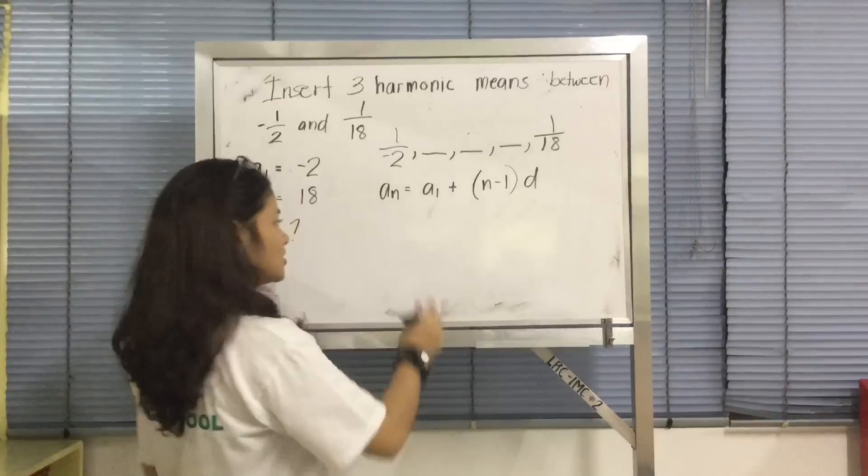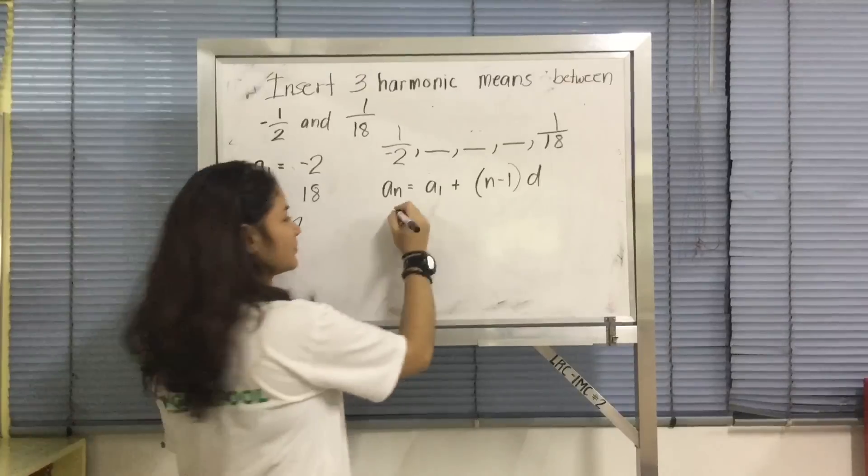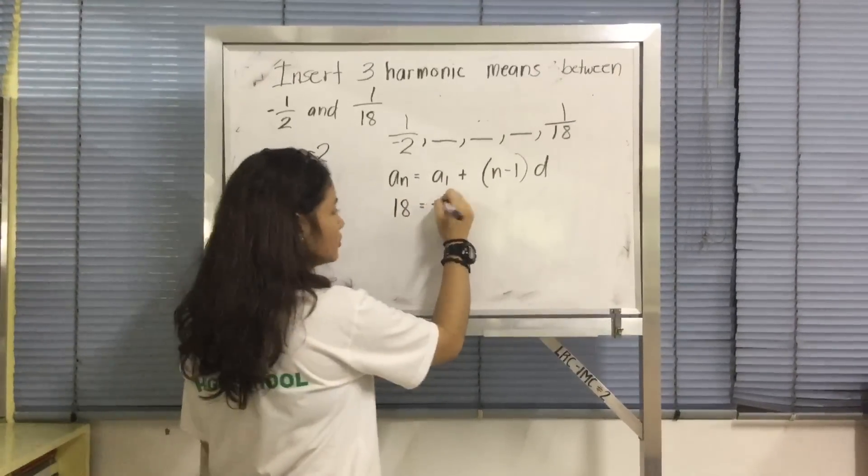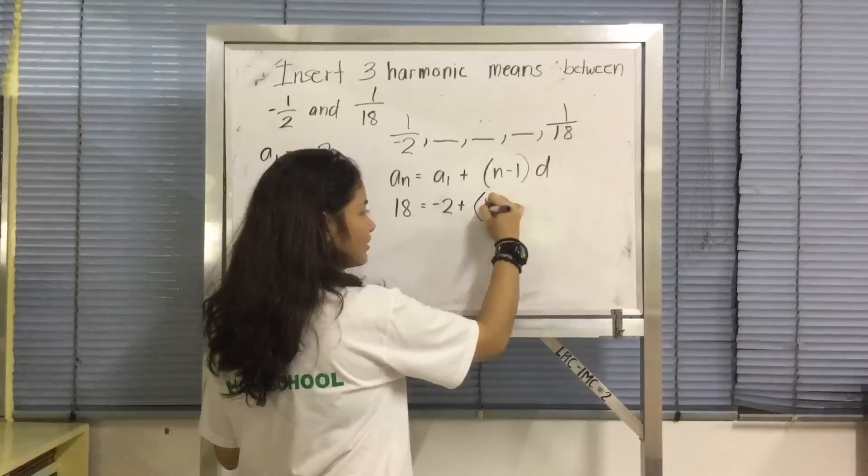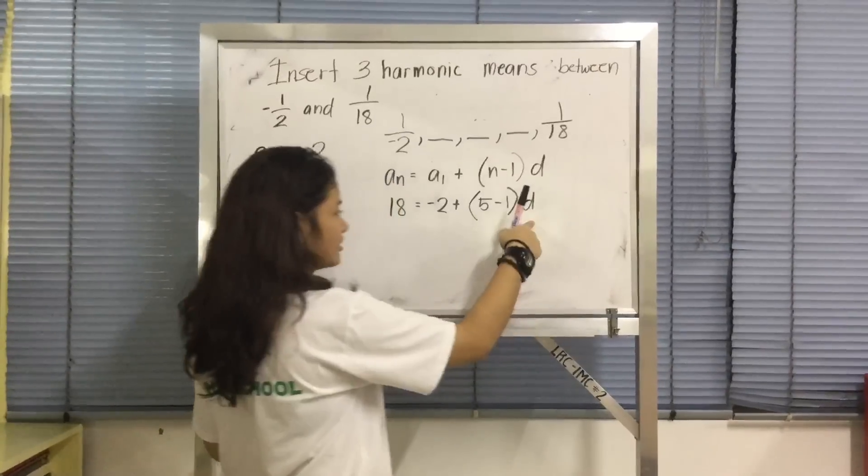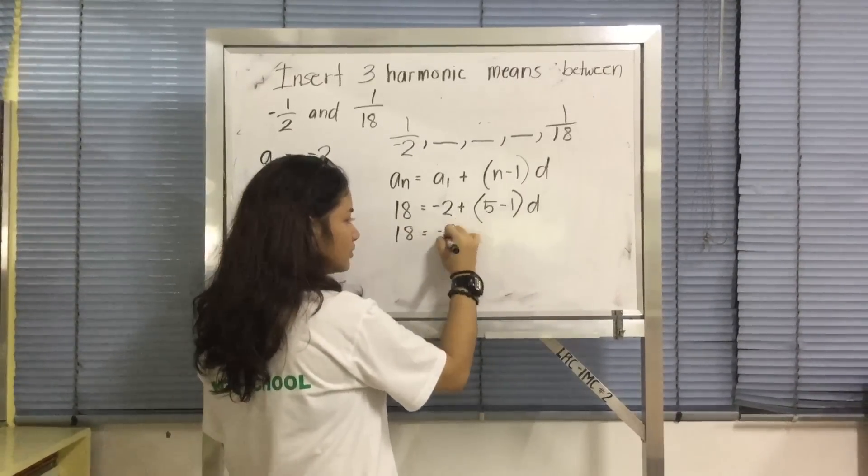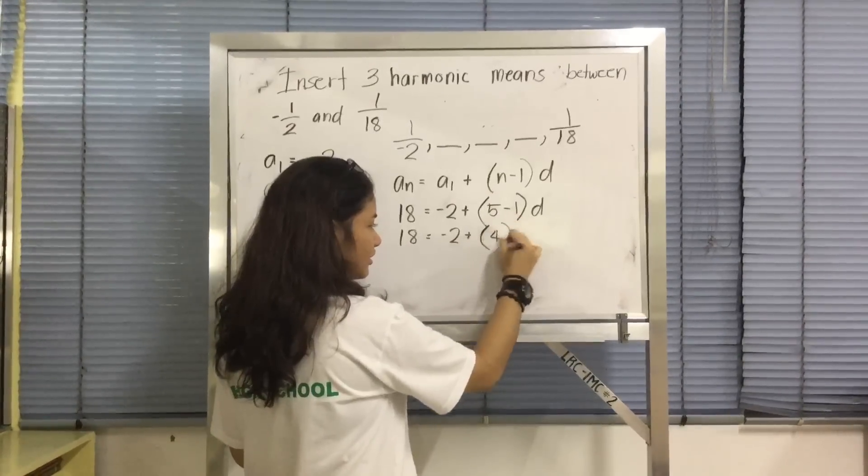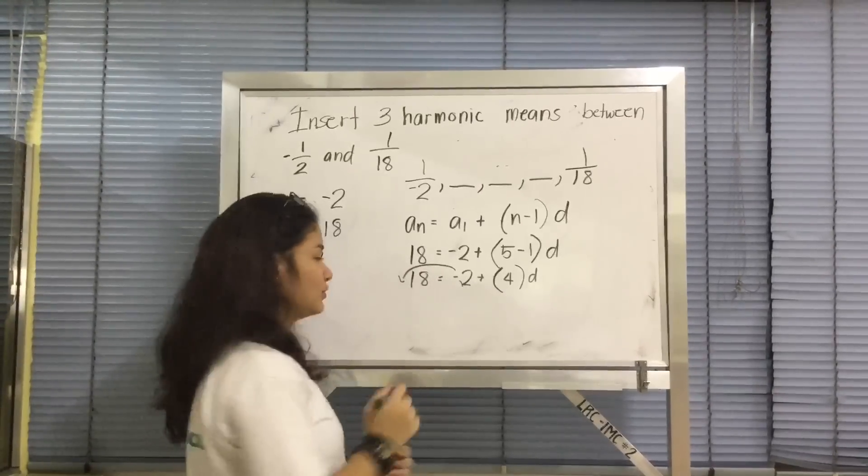You get the difference. So an is 18 because it's the last term. So 18 is equal to a sub 1, which is negative 2, plus n, which is 5, minus 1, multiplied by the difference. So 18 is equal to negative 2 plus 4d. So you transfer negative 2 beside 18, so it's going to be positive 2.